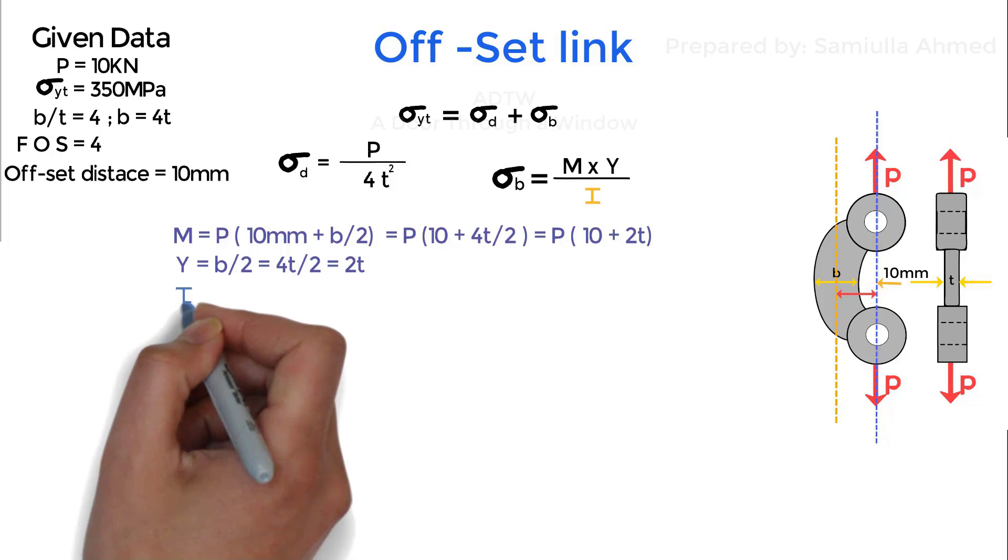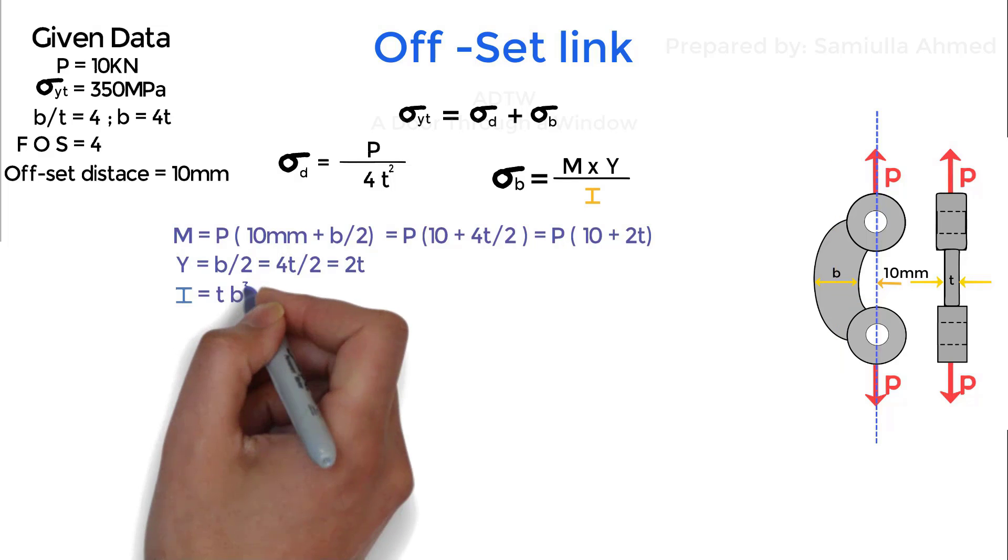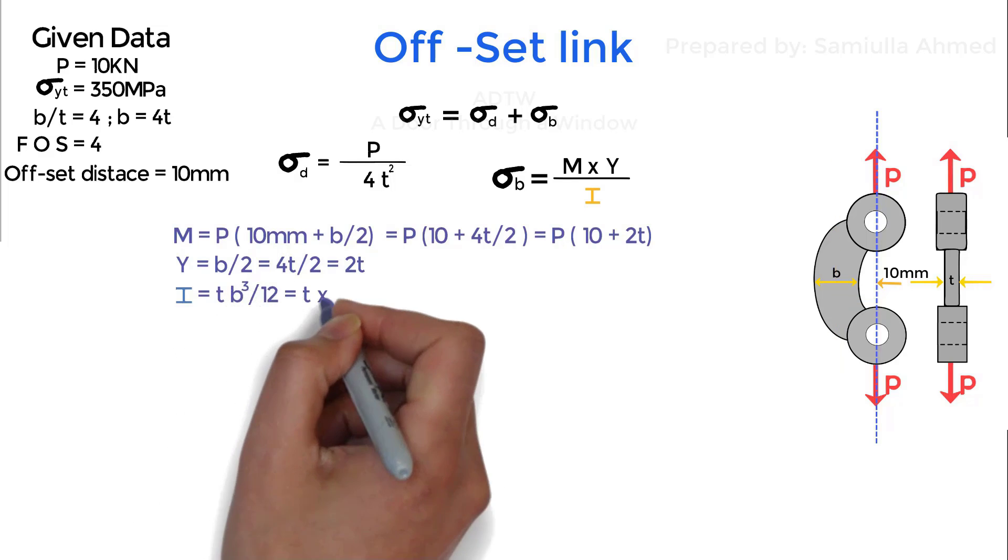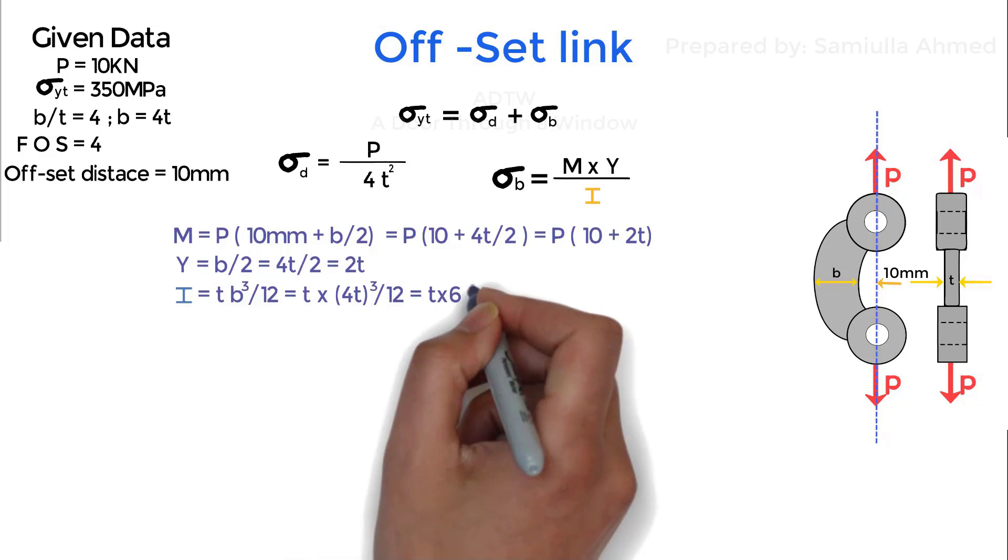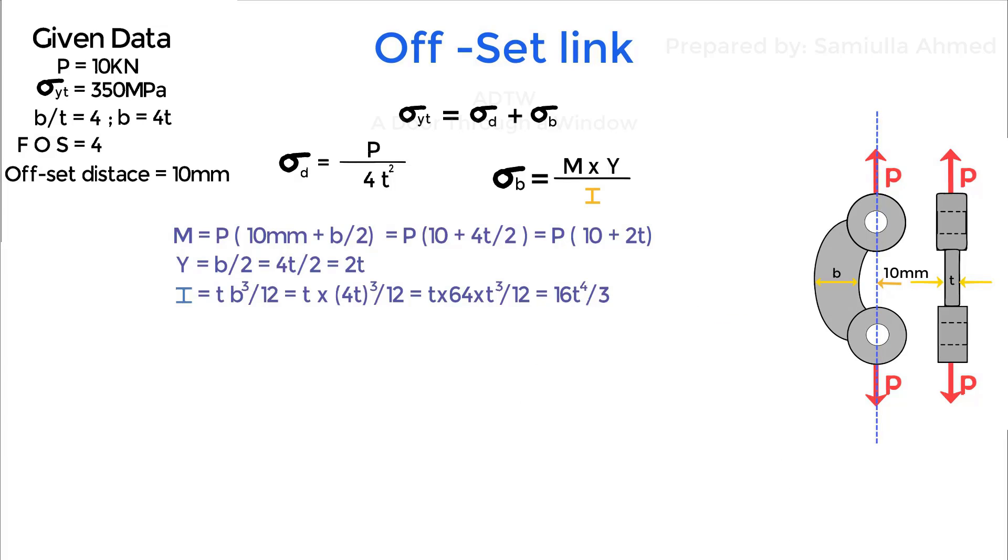And I is equal to moment of inertia. For rectangular section it is given as thickness into width cube upon 12. And if we put the values and simplify we have I is equal to 16t to the power 4 upon 3.